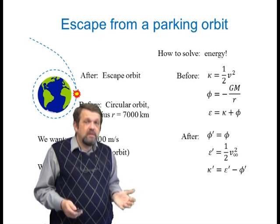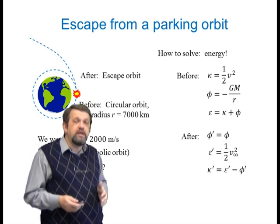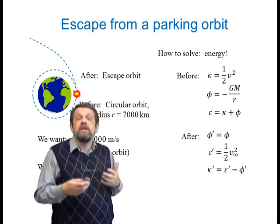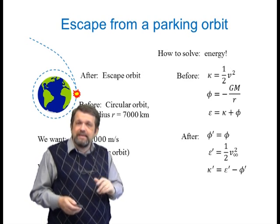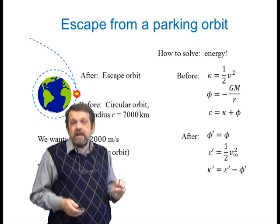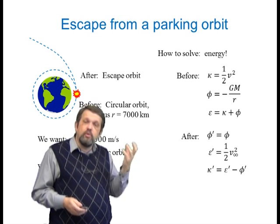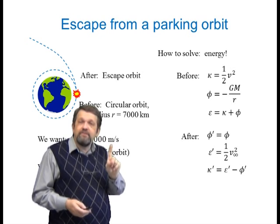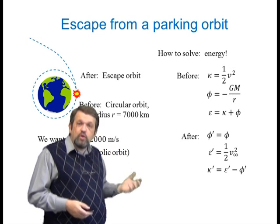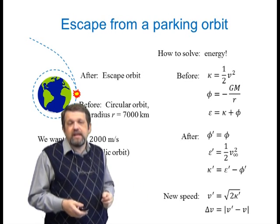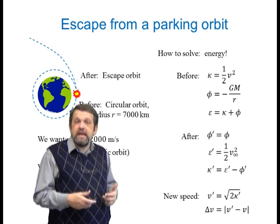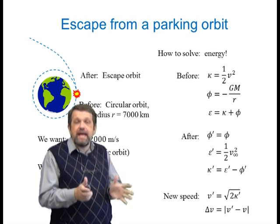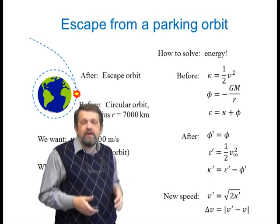The new total energy for our hyperbolic escape orbit is just ½v∞², which we can calculate directly from the desired asymptotic speed. The new kinetic energy is the new total energy minus the new potential energy (which is the same as the old). Once you have the new kinetic energy, the new speed is √(2 × KE). Then delta-V is the absolute value of the difference between old and new speeds.